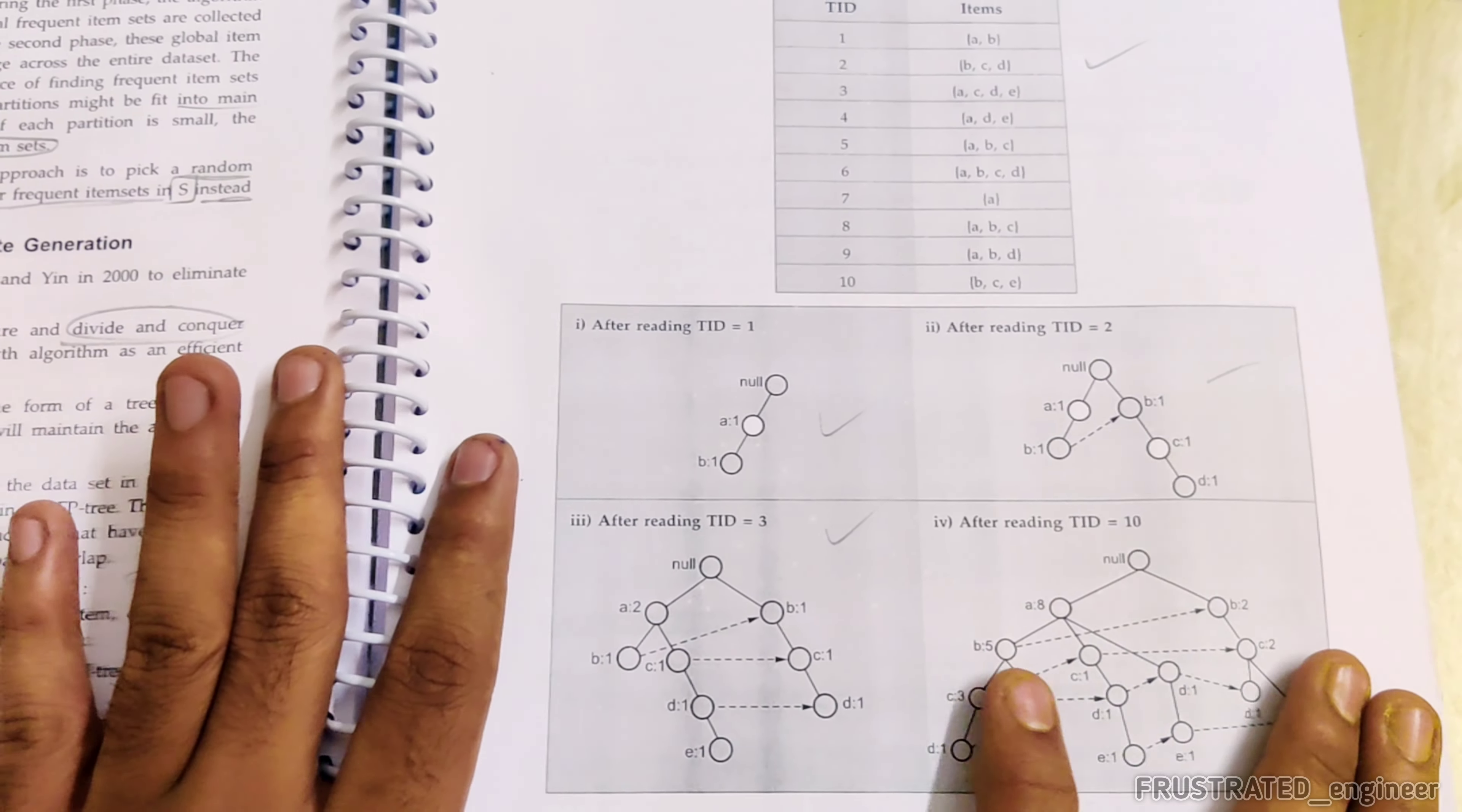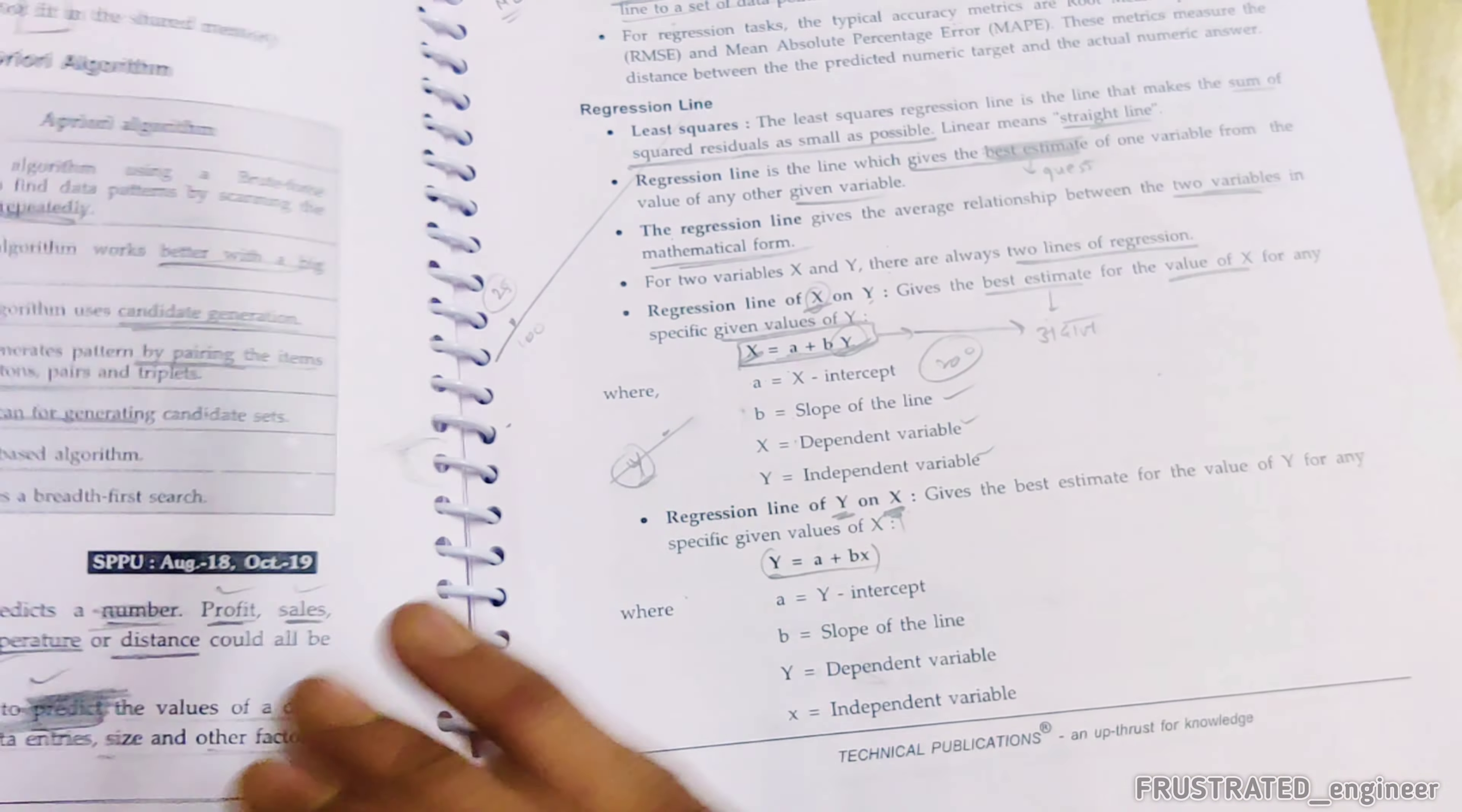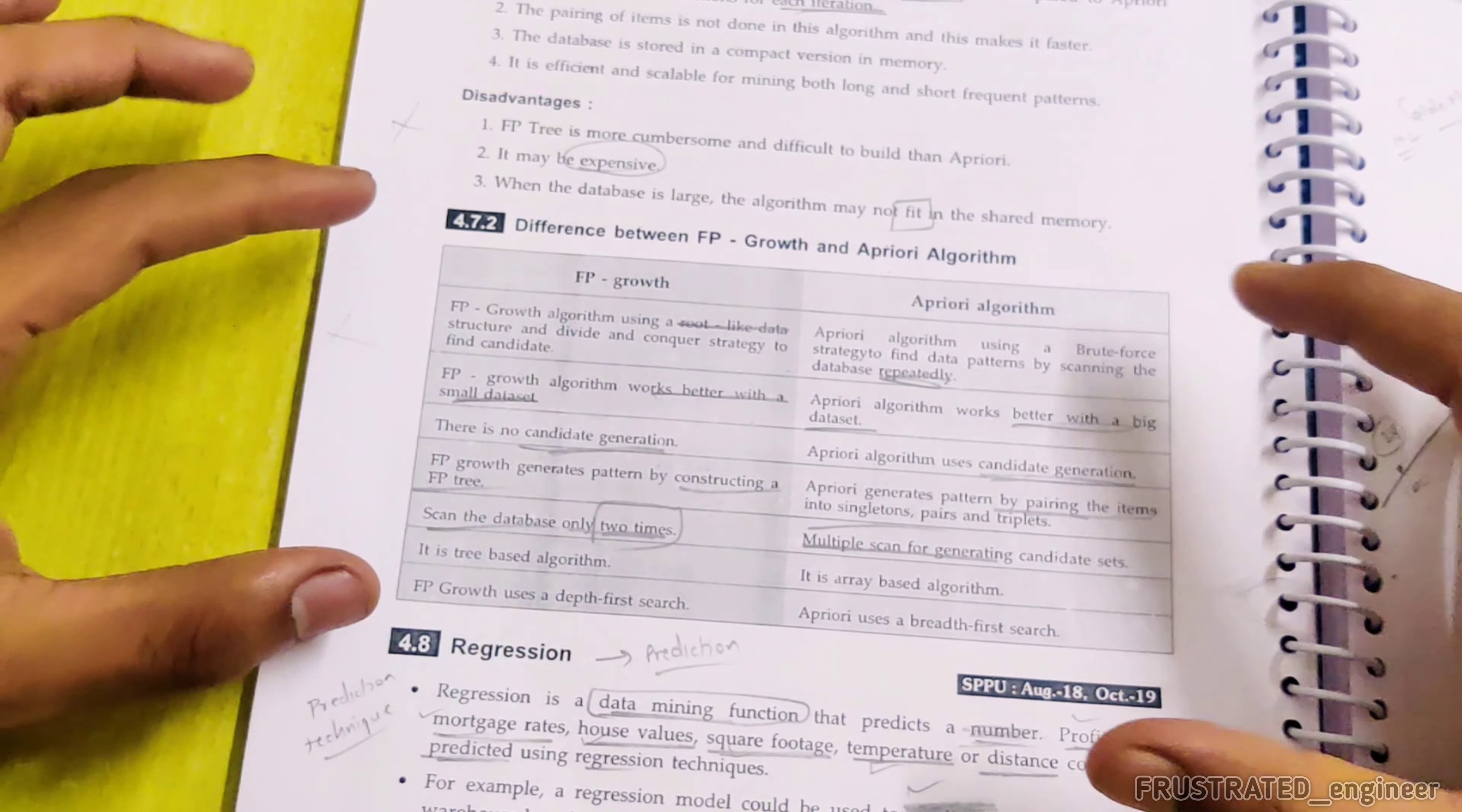One, where is it? A, B. And then B, where is it? B, C, D. Okay, third transaction. A, C, D, E. A, C, D, E. A, C, D, E. What is your note here?